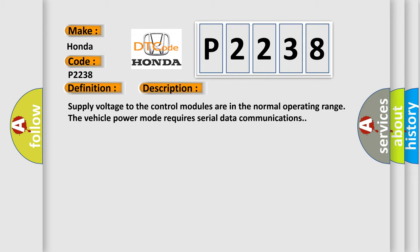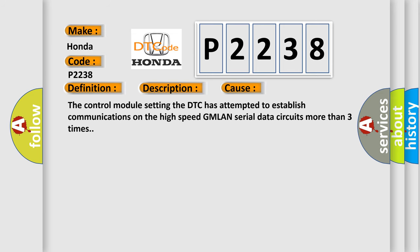This diagnostic error occurs most often in these cases: The control module setting the DTC has attempted to establish communications on the high-speed GMLAN serial data circuits more than three times.